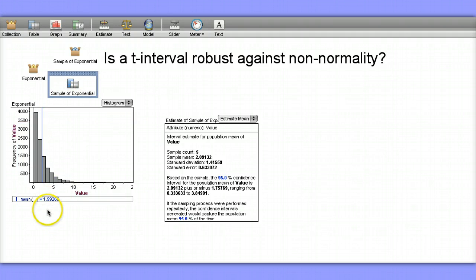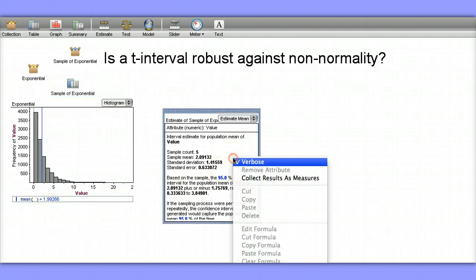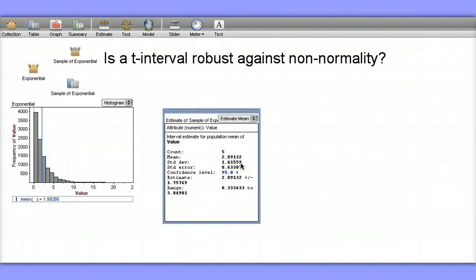So this particular interval does contain the true value of the mean, which is 1.99266. If you right-click on this, you can change this to be the non-verbose form of the interval.